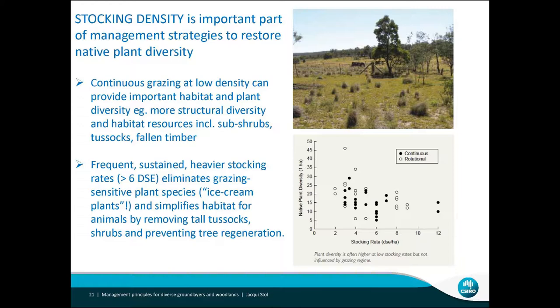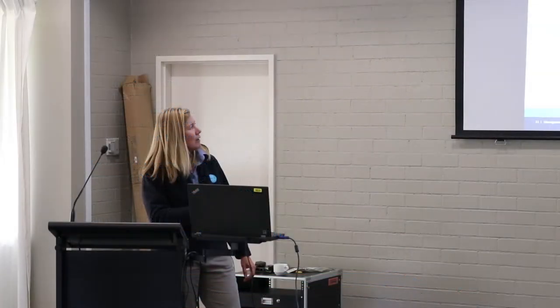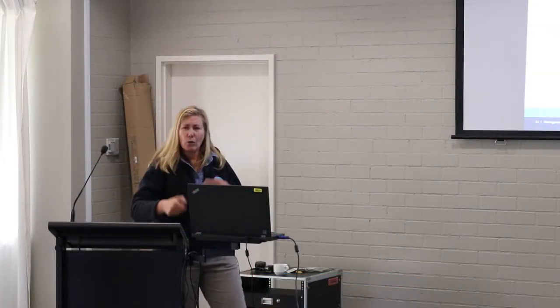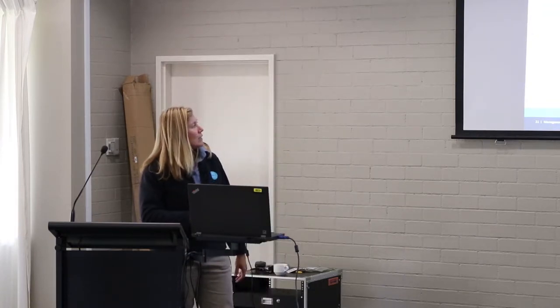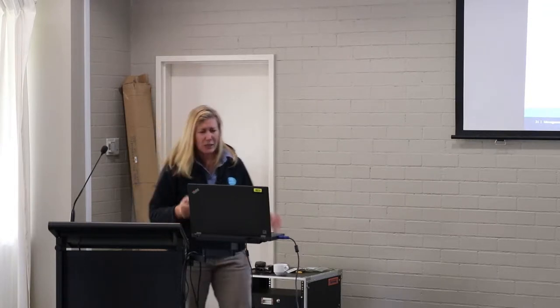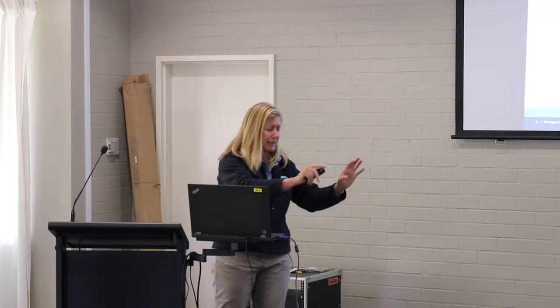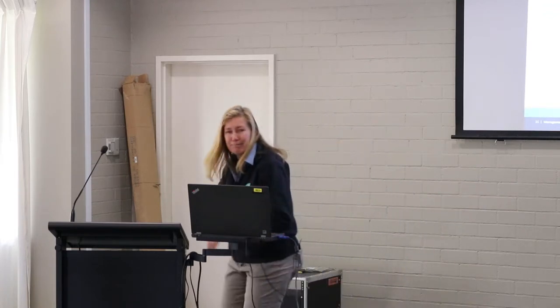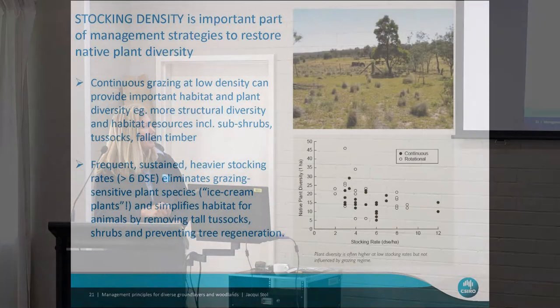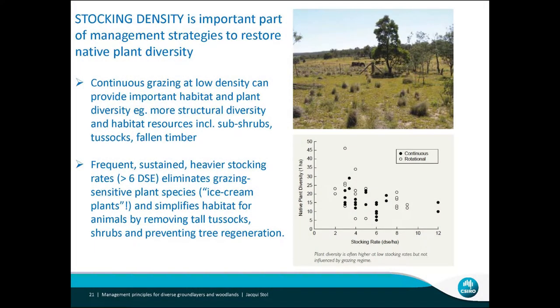You often have more structural diversity — sub-shrubs, tussocks, fallen timber — which all contribute to resources for wildlife. Frequent sustained heavier stocking rates eliminate those grazing-sensitive species. Stock as well as kangaroos just love things like orchids and wildflowers. I've been in a paddock with three orchids, marvelled at them, and came back the next day to find them all chewed off — that's what kangaroos do, they're very tasty! Heavier stocking rates also tends to make it flatter, eliminating those taller tussocks and preventing tree regeneration.